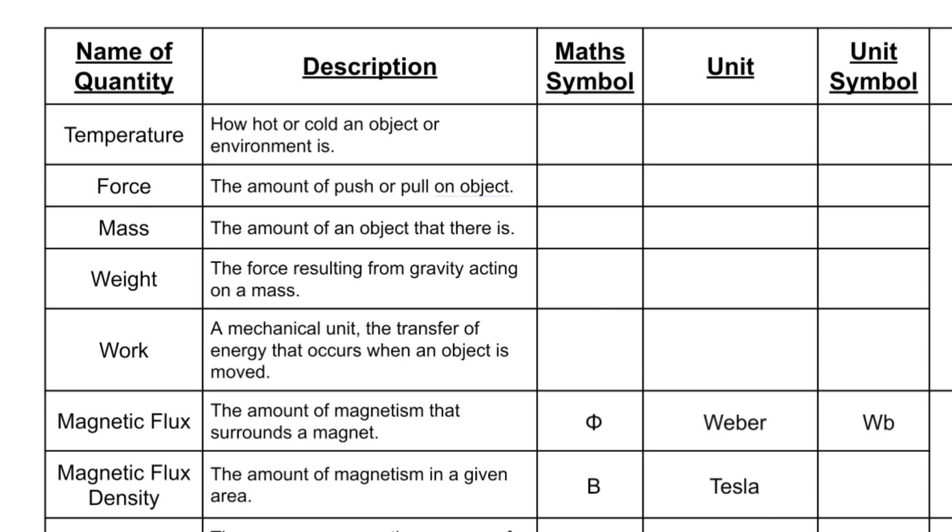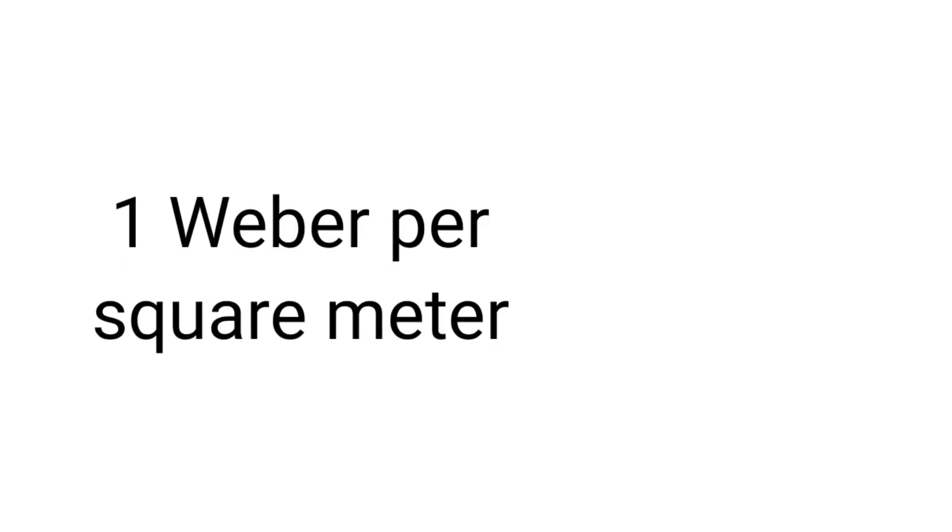We give it the unit symbol capital T for tesla. This is a nice one because it's a good example of how we can understand how SI units work. The tesla is actually a measurement of the amount of webers per meter squared. We could take the webers surrounding a magnet and divide it by the area it's covering in meters squared, and that would convert it into teslas. But we've given that unit of webers per meter squared a special name: we call it the tesla.